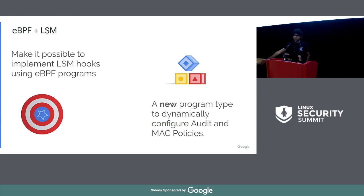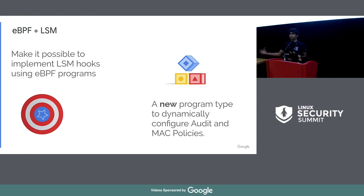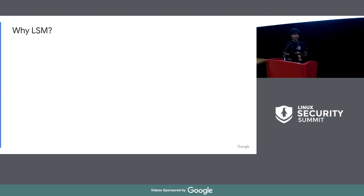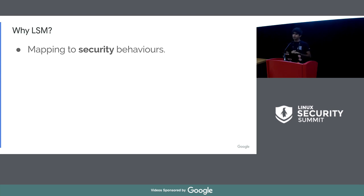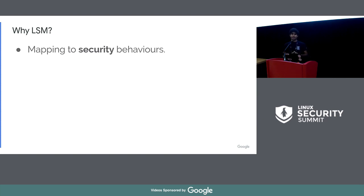We want to implement LSM hooks as eBPF programs, and we don't want to do that with just BPF tracing programs. We want a new BPF program type geared for the security use case. People ask why we're using an LSM. The answers are basically what LSM was created for. They map not to the API but to behavior. We used to trace exec syscalls to log process execution events — exec syscall is the API, not the behavior representing process execution. When a security analyst tells me they want to log when a process gets executed, that's what they're telling me — they don't say they want to log on an execve event. That's where LSM fits in: it hooks at the behavior level, not the API level.